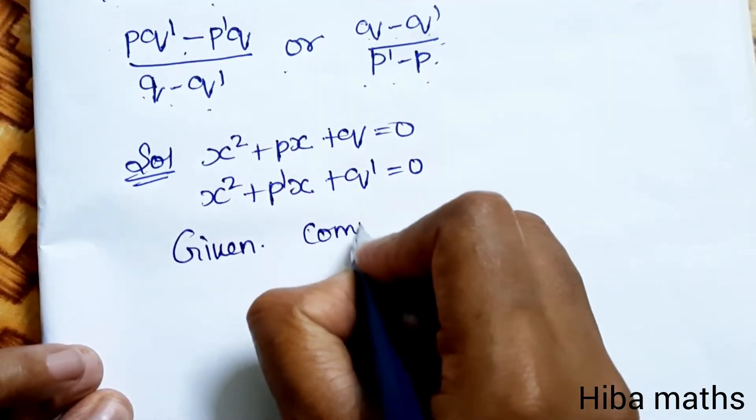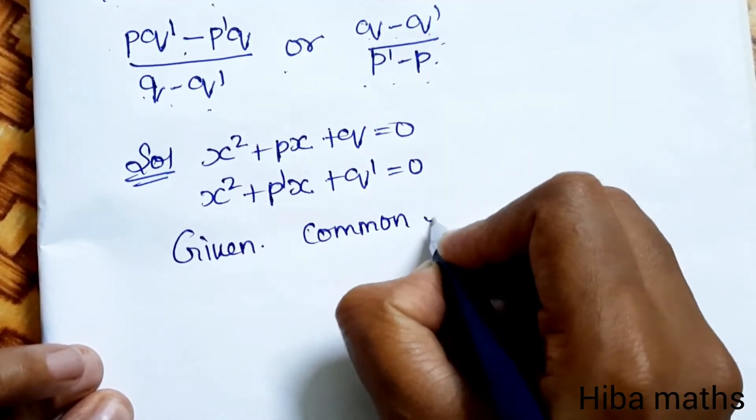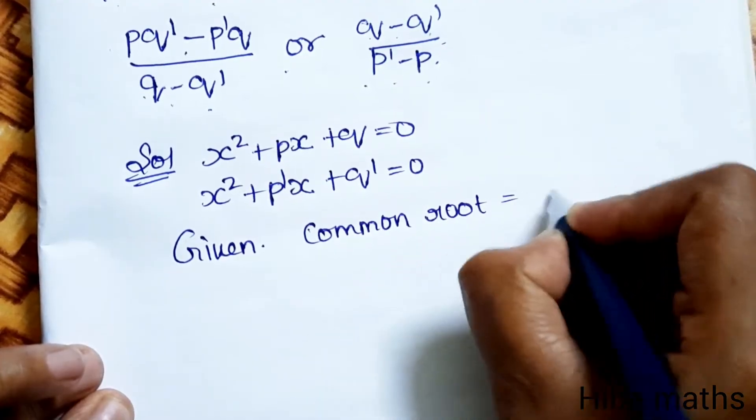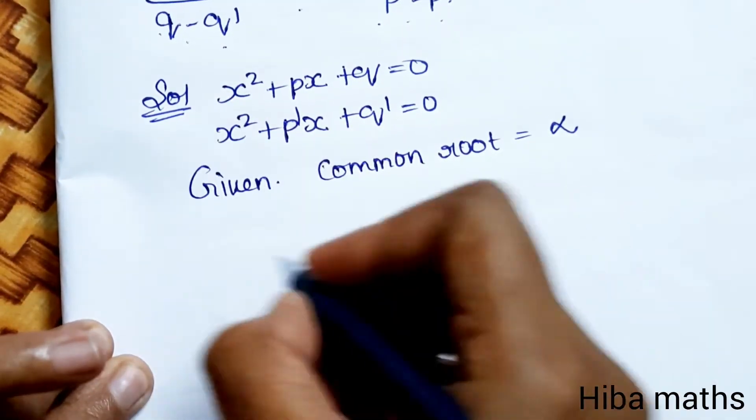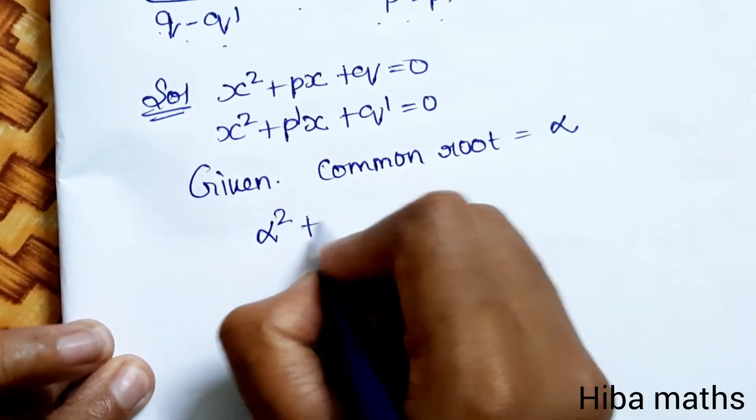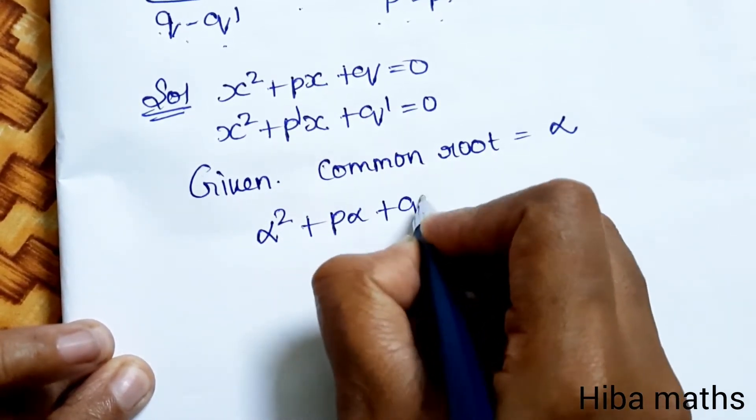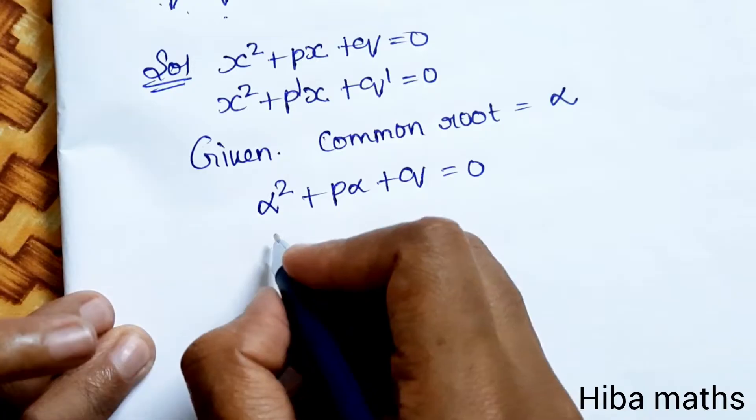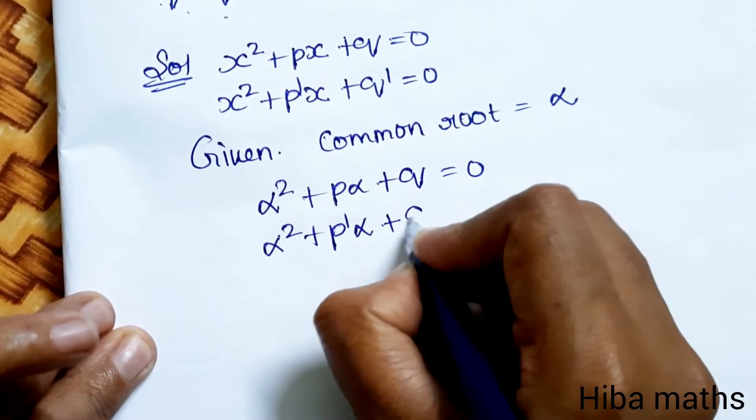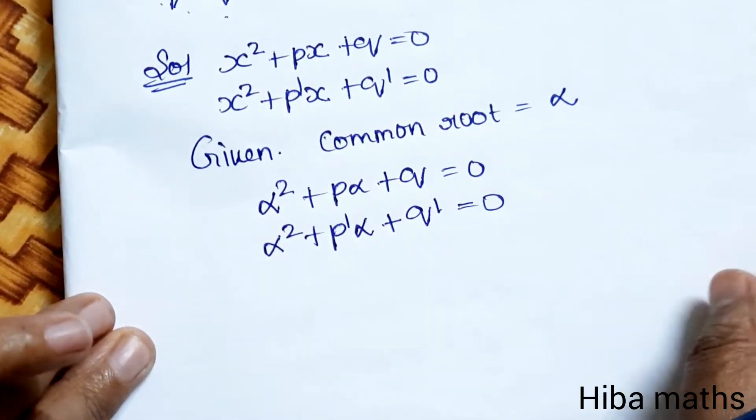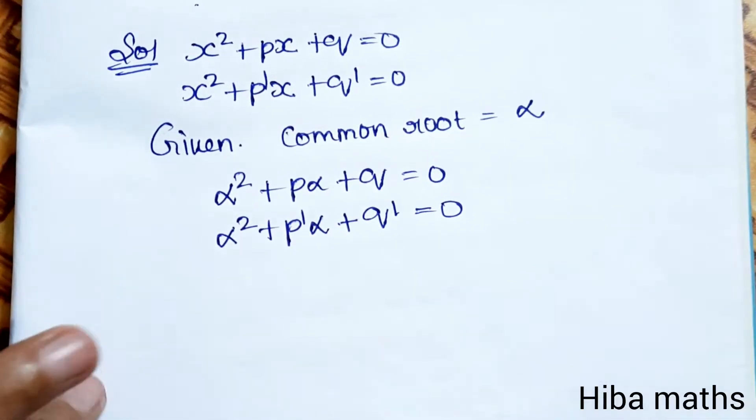Common root, let's say α = 0. We will put alpha, so replacing x with α: α² + pα + q = 0, and α² + p'α + q' = 0.